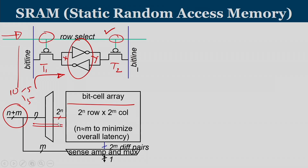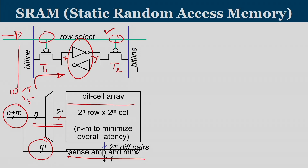A 2-to-2^n decoder selects the row, the entire row contents are transferred to a sense amplifier, and then the column address is applied so one of the 2^m values comes out. This is how the binary cell array is organized and values are extracted. In a read operation, the address is decoded into row and column, the row decoder selects the appropriate row, the selected bit cells drive the bit lines, and then the column select extracts the specific value.